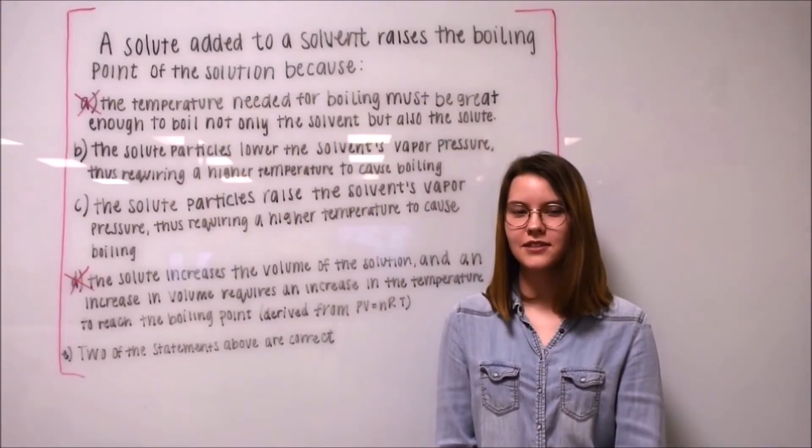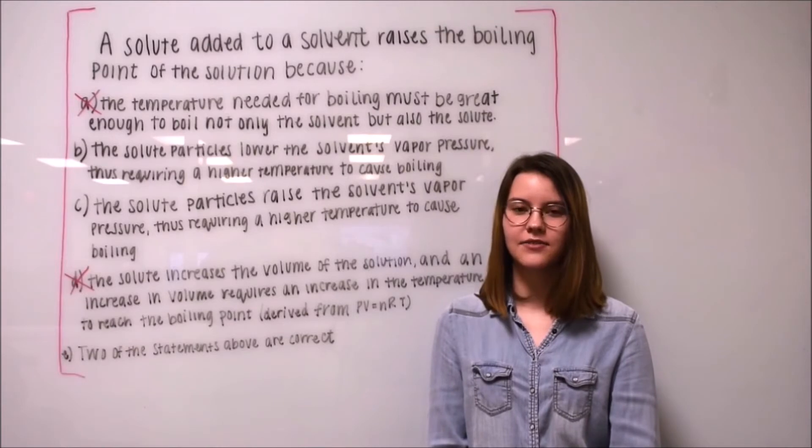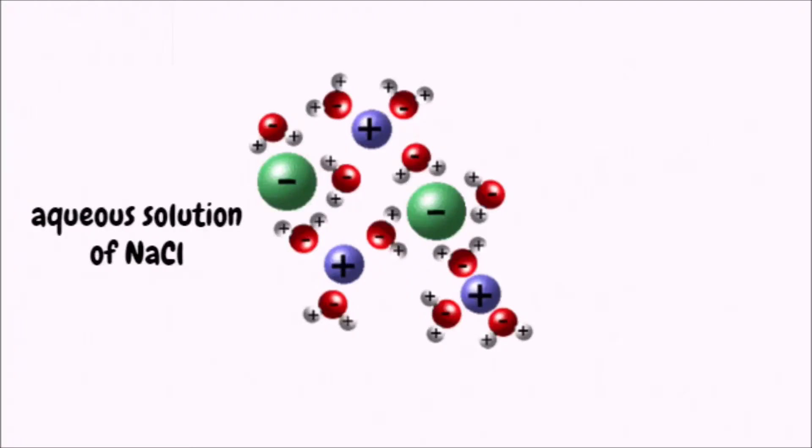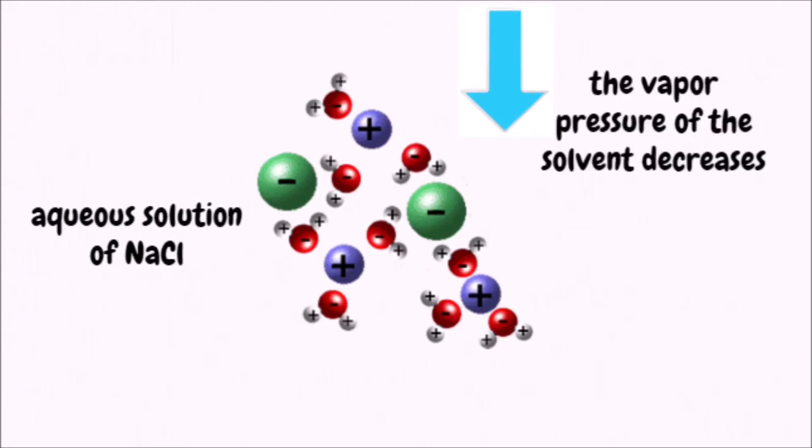In order to consider options B and C, we need to understand the effects solute particles have on the solvent's vapor pressure. When solute is added to the solvent, the number of molecules of the solvent on the surface of the solution decreases. And hence, the vapor pressure of the solvent decreases.